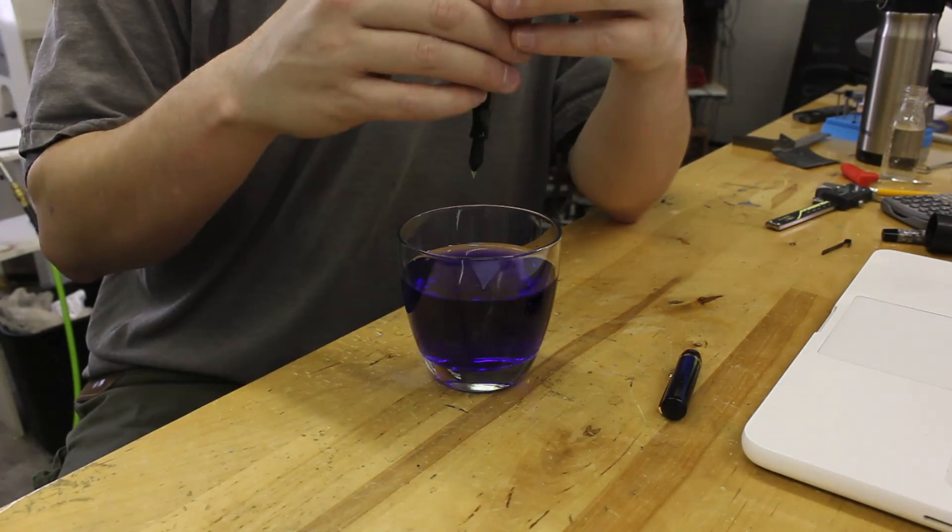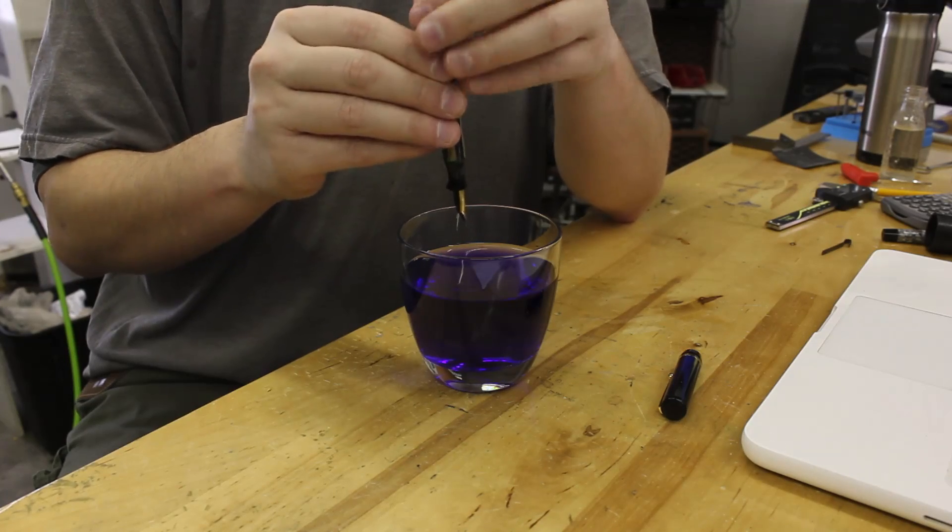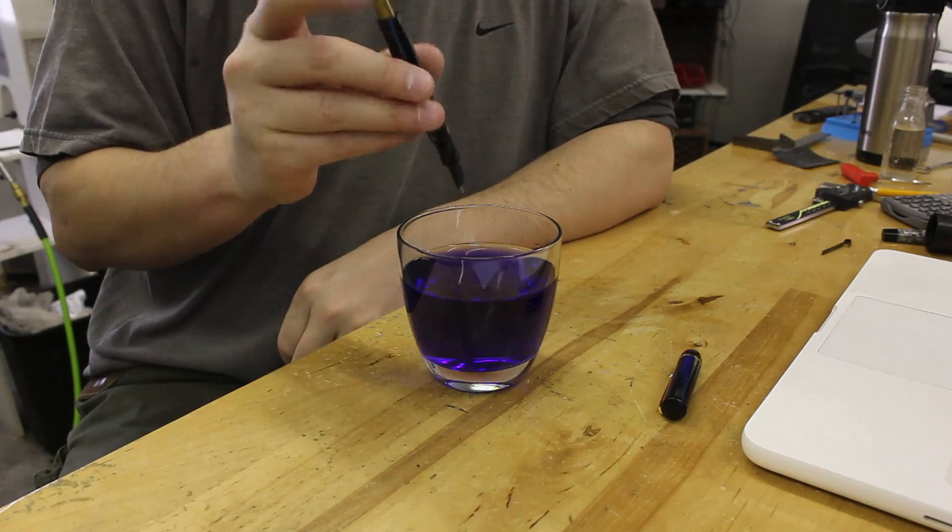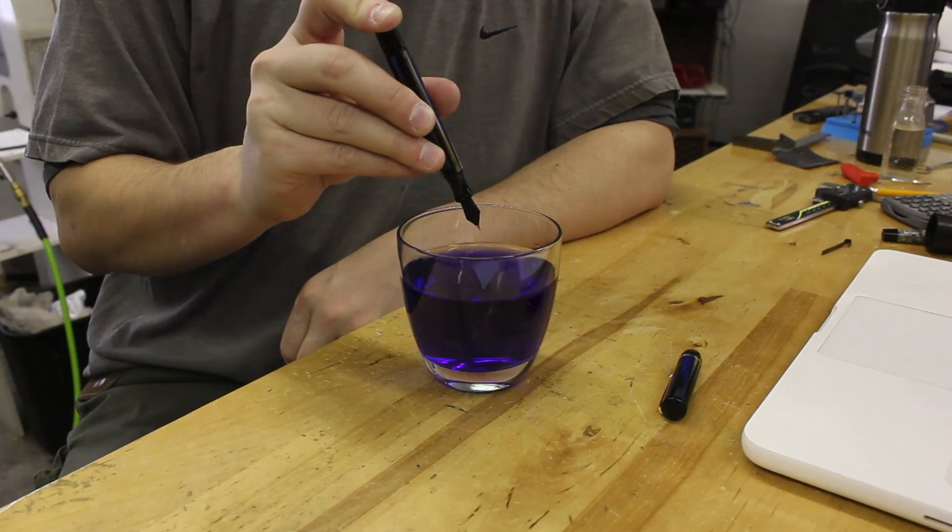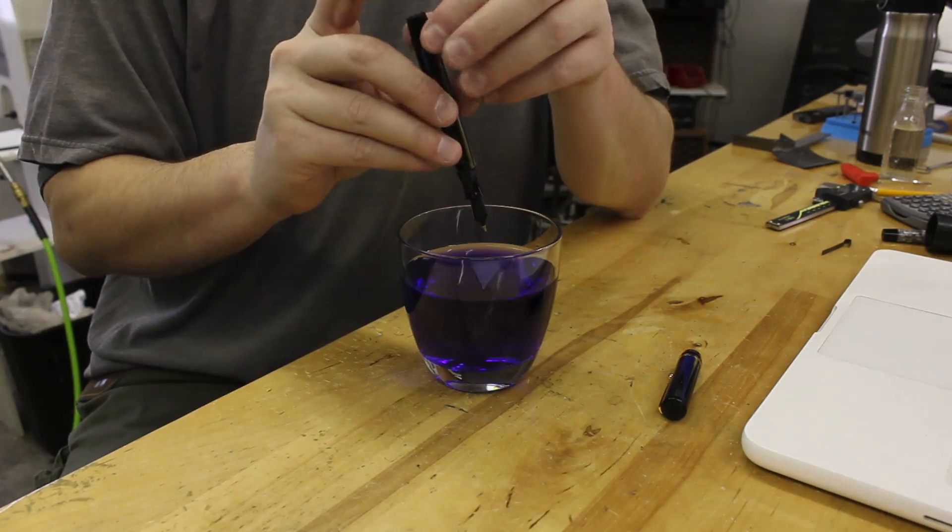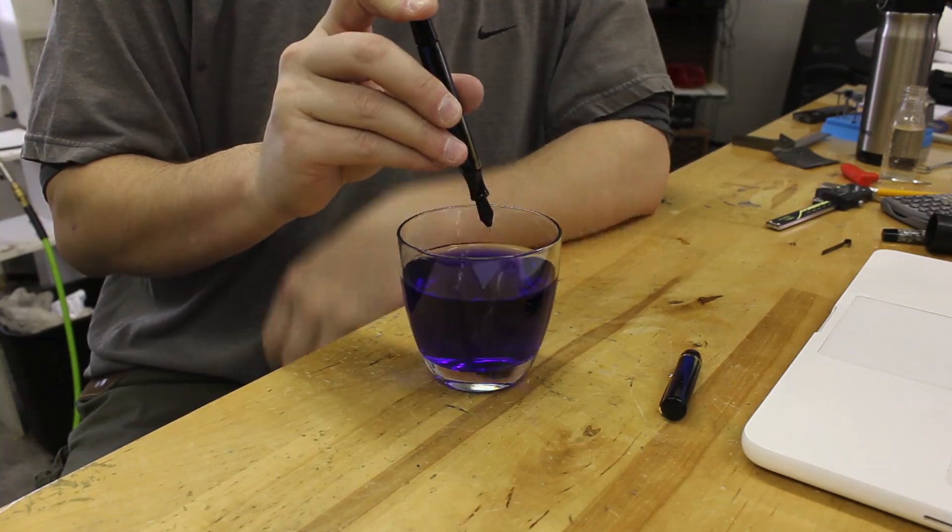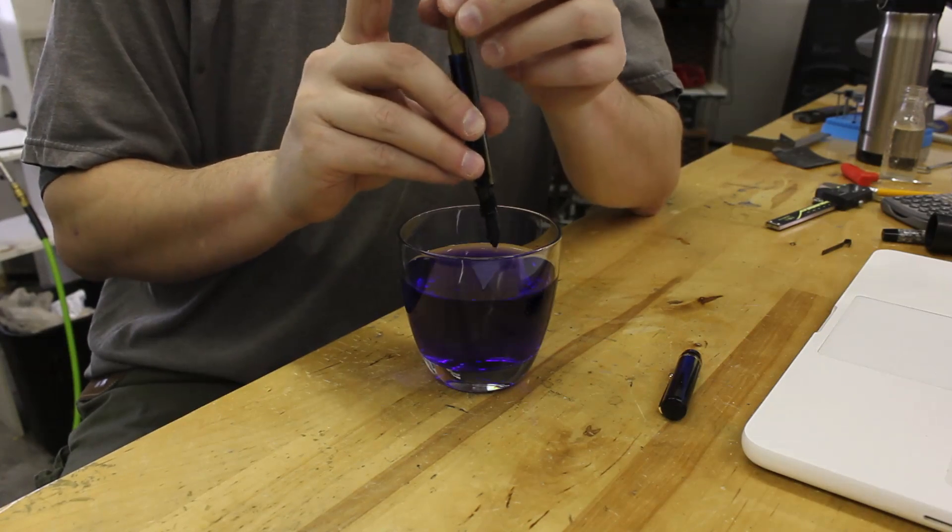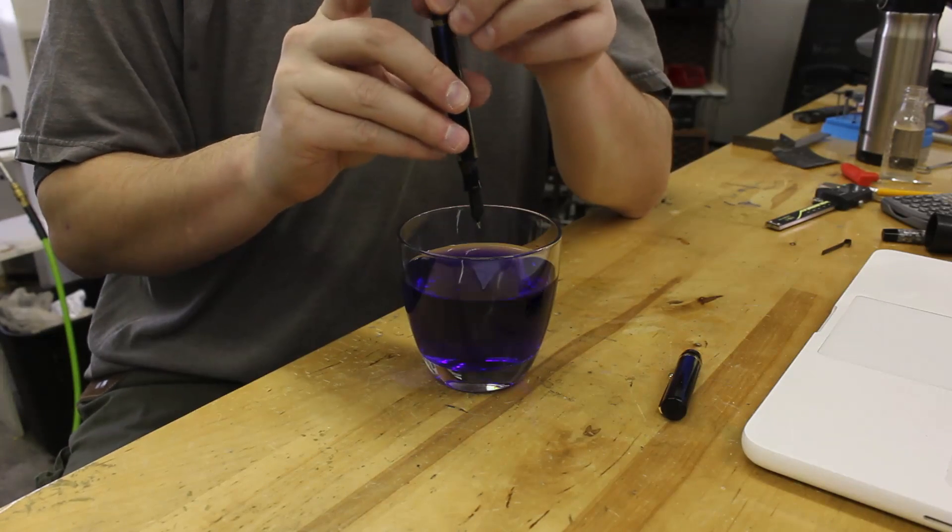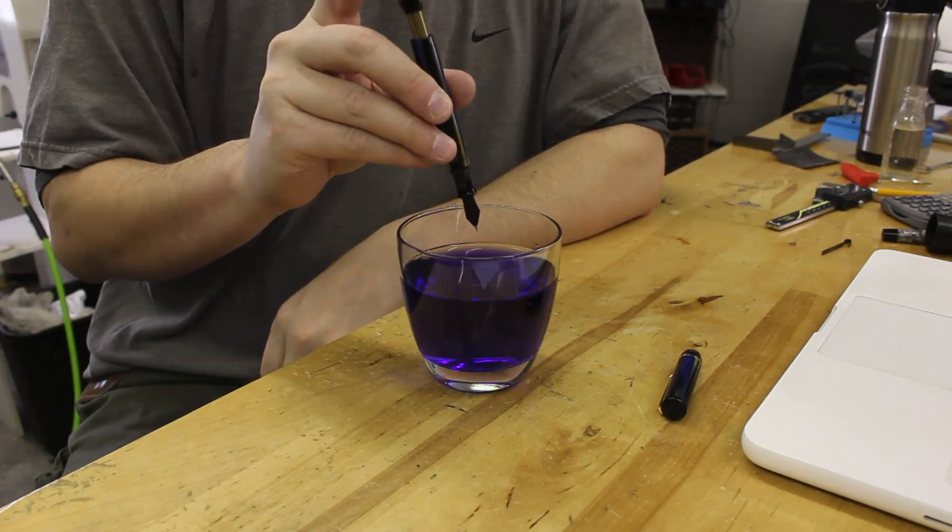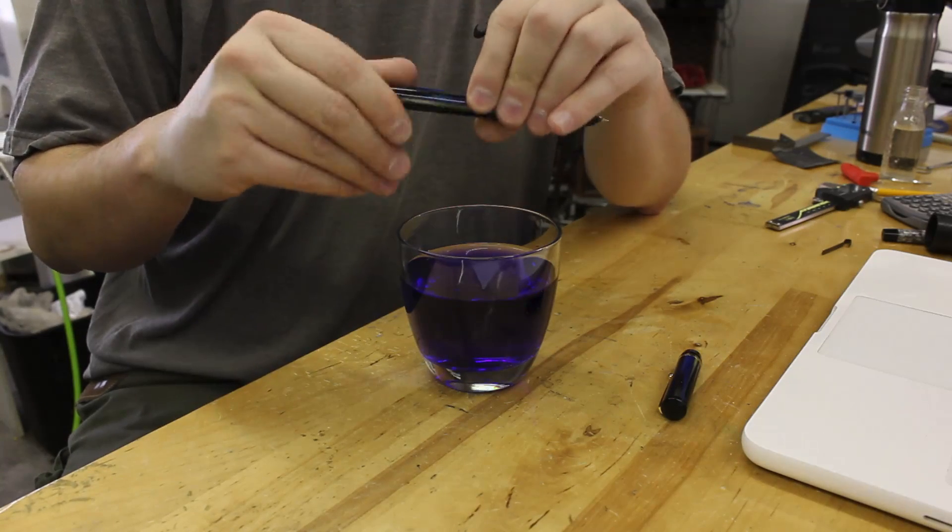Now, to empty the pen, you're just simply going to do the same thing. But you're going to do it without the pen being in the inkwell. Now, when you're emptying the pen, it might take a couple of strokes to get it completely empty. But it shouldn't be any more than three. I believe it's completely empty right now. And then screw in the blind cap again.